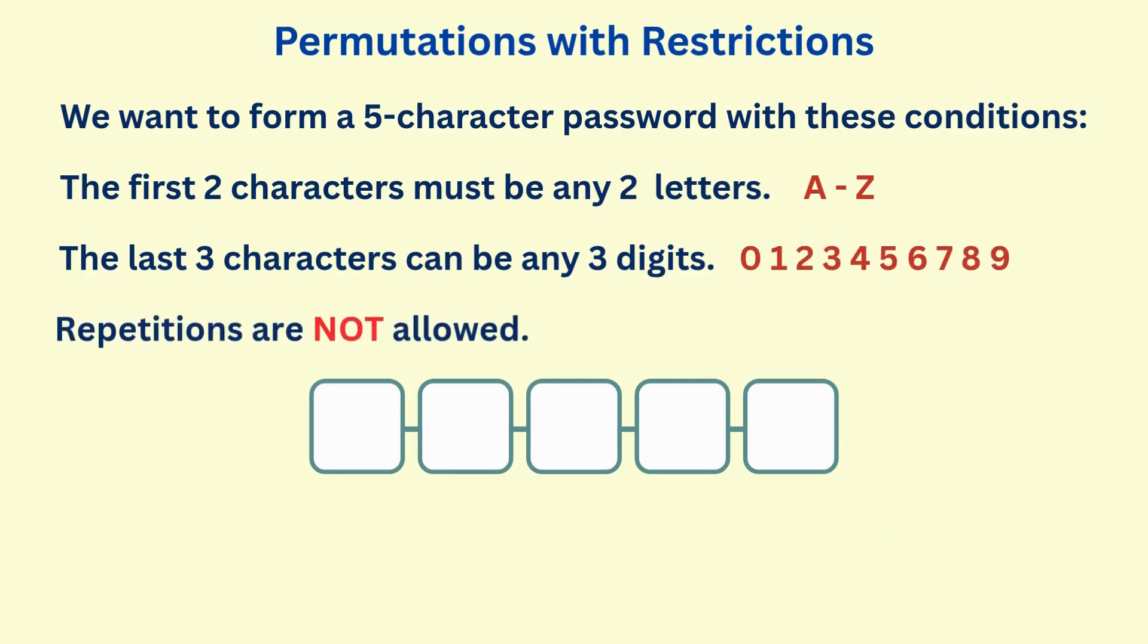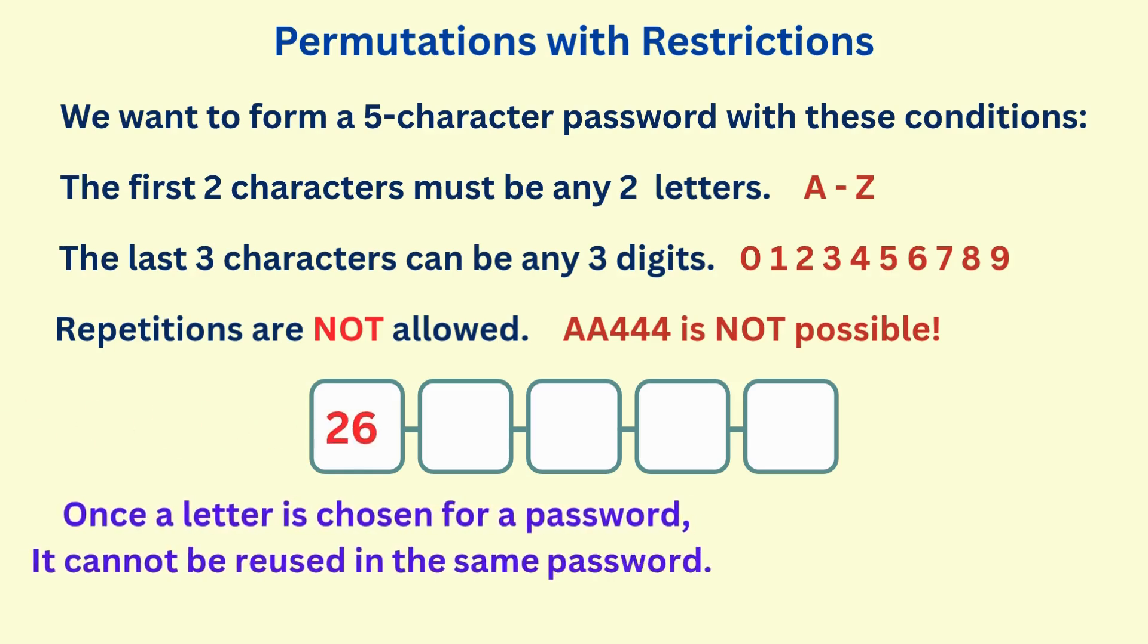Now what if repetitions are not allowed? There are 26 letters in the alphabet, and each of the first two boxes must have a letter, so we have 26 choices for the first. Once a letter is placed in the first box, only 25 choices would remain for the second box.